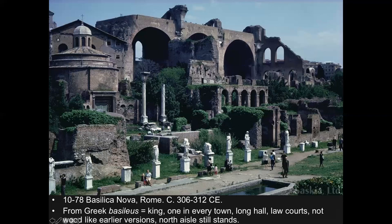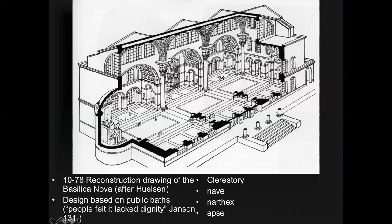You can also see these arches here in the reproduction, and see how the structure goes — basically a long rectangle. The basic parts of the Basilica are going to continue into the churches and cathedrals we'll see a little later on. One of them is the clerestory — windows that let light into the building. The long hallway in the middle is the nave. The narthex would be the entrance, and then the apse would be at the end — the curved area — which generally had sculptures in it. Like the Pantheon, this design was also based on the public baths, and some people felt it lacked dignity at the time.